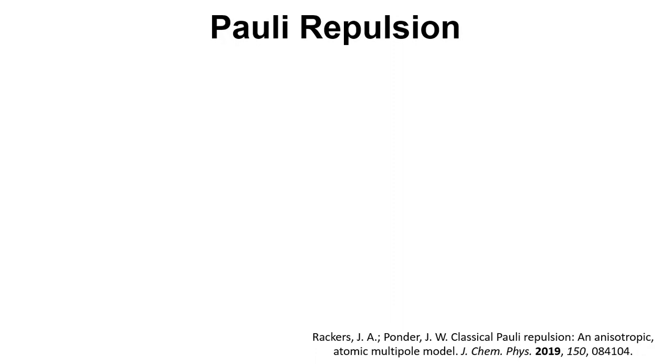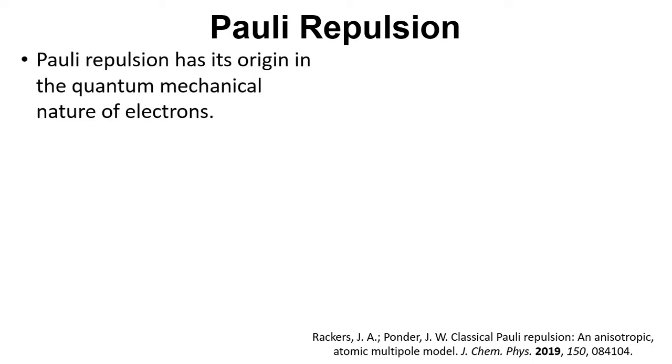Then we move on to Pauli repulsion. Pauli repulsion has its origin in the quantum mechanical nature of electrons. Two electrons with the same spin can't occupy the same orbital. If atoms start to come close to each other and electrons of the same spin start to overlap in those orbitals, then they push away. That's the explanation from the Pauli repulsion and the Pauli principle.